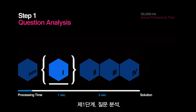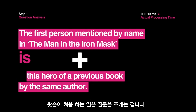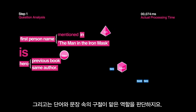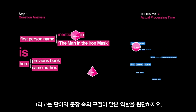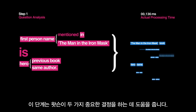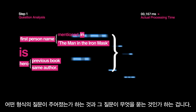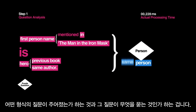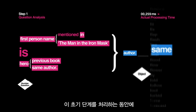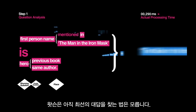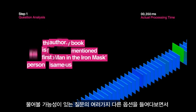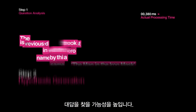Step 1: Question Analysis. The first thing Watson does is parse the question into its parts of speech and identify the different roles the words and phrases in the sentence are playing. This helps Watson determine two distinct things: what type of question is being asked, and what the question is asking for. During this early stage, Watson increases its chances by looking at many different options of what the question might be asking for.